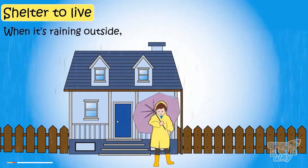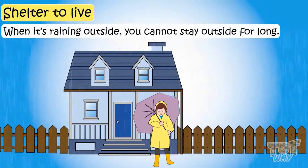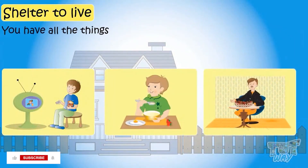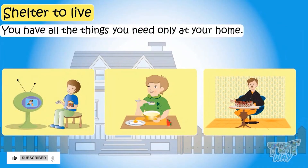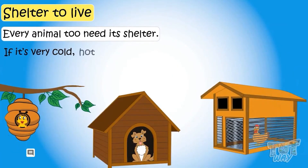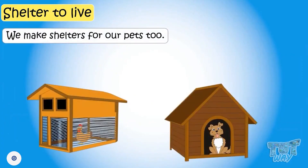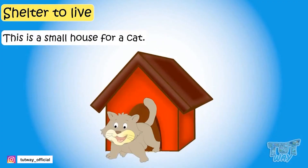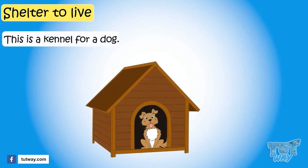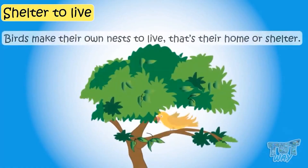When it's raining outside, you cannot stand outside for long — you need your shelter, that is your home. You feel comfortable at your home. Every animal too needs a shelter. We make a shelter for our pets — like a small house for a cat and a kennel for a dog. This is a coop for a hen. Likewise, birds make their own nests to live.